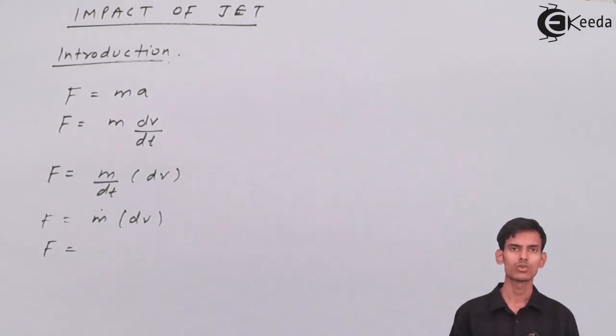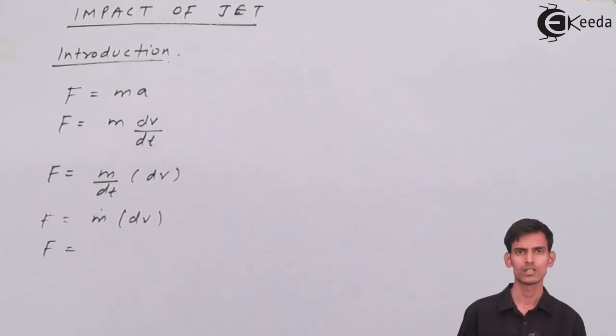And there's one more formula. Mass flow rate m dot is rho av or you can say rho into q. Rho is density into the discharge.